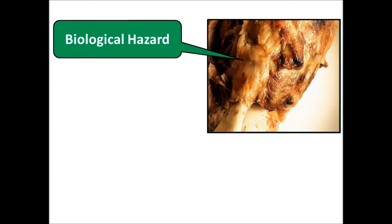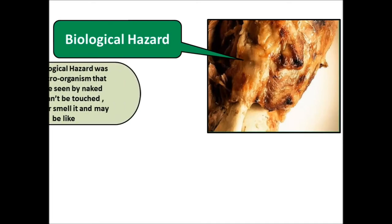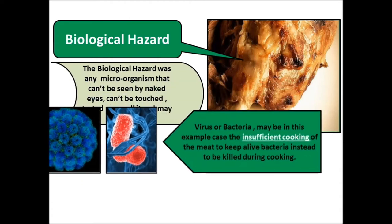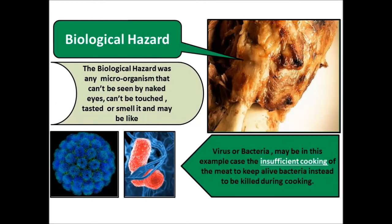The meat, as mentioned, may be a biological hazard. The definition of a biological hazard is any microorganism that cannot be seen by the naked eye, touched, tasted, or smelled — such as bacteria and viruses. In this meal, we mentioned the meat because insufficient cooking may result in a microbiological or biological hazard from viruses or bacteria present in the meat.